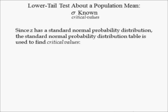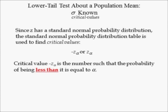The critical value approach to the lower tailed test compares the Z value, which is associated with the level of significance, to the Z-stat associated with the P-value. Since Z has a standard normal probability distribution, the standard normal probability table is used to find critical values, specifically negative Z subscript alpha.